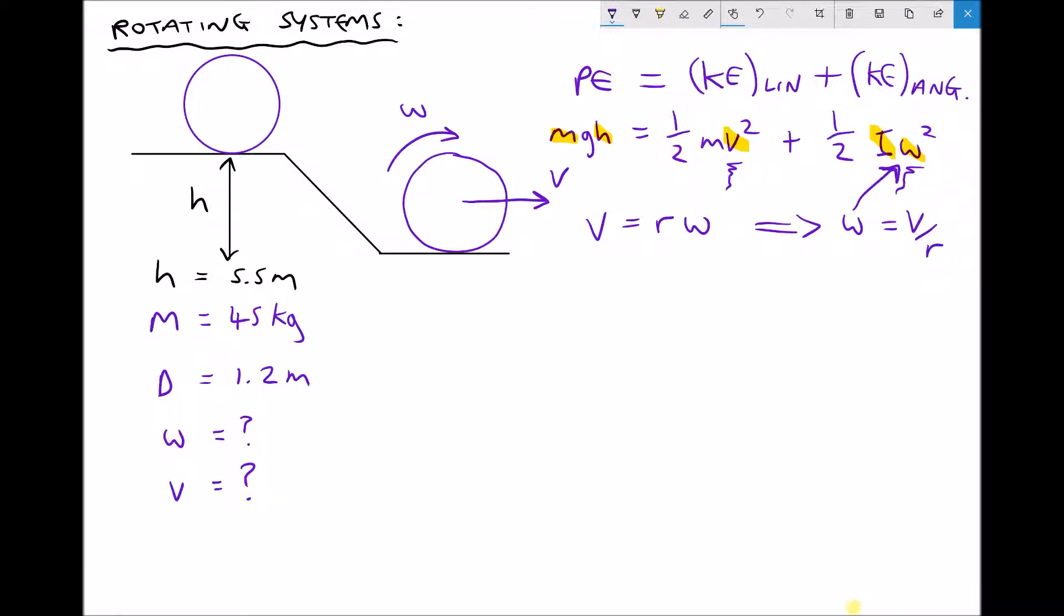In this example, I'm going to replace V with r omega. So let's rewrite our original formula. We get mgh remains unchanged, we get a half m, now instead of V I'm going to put r omega, and that's squared. Then we've got plus a half i omega squared. So now we've got rid of V. We only have one unknown in this equation, and that unknown is omega squared.